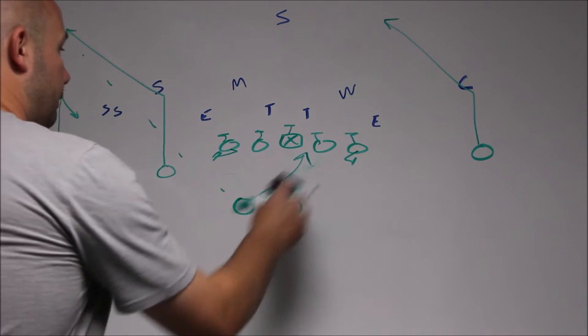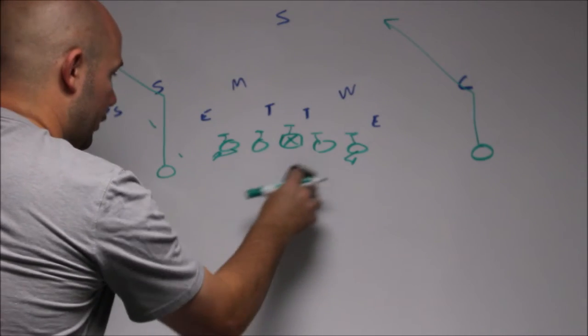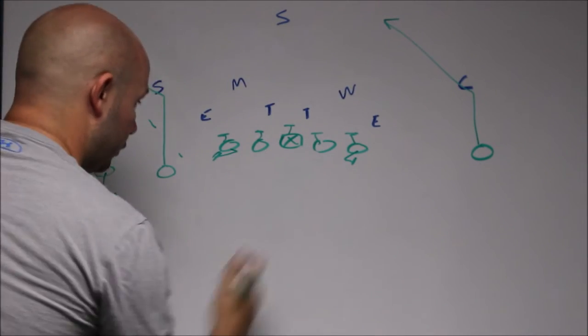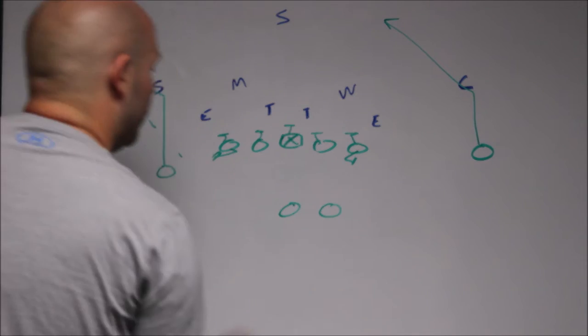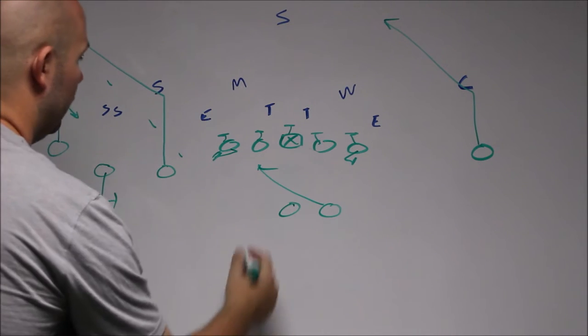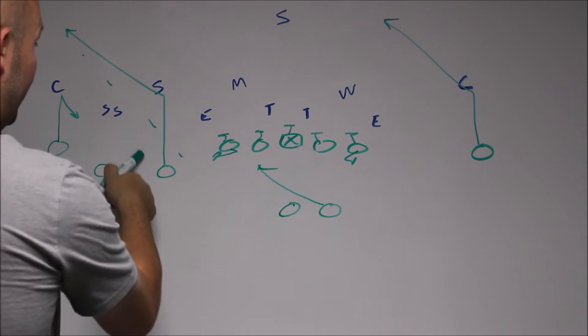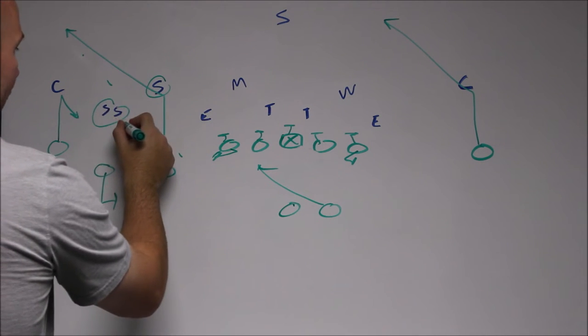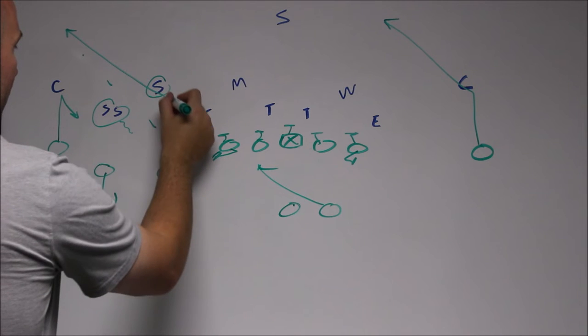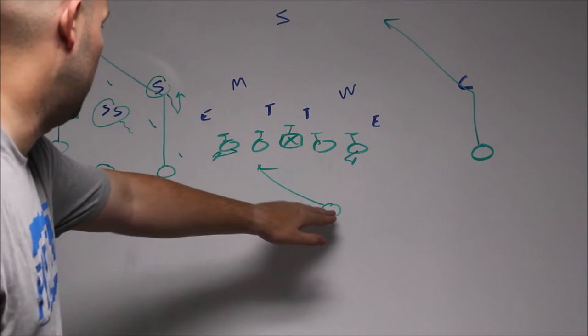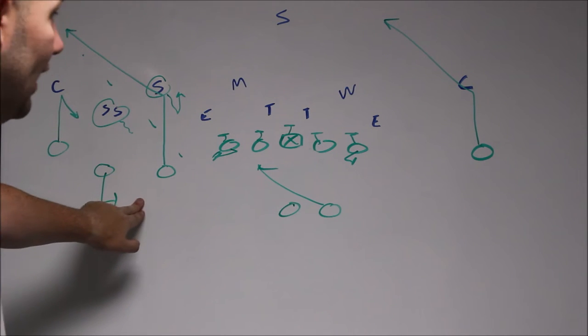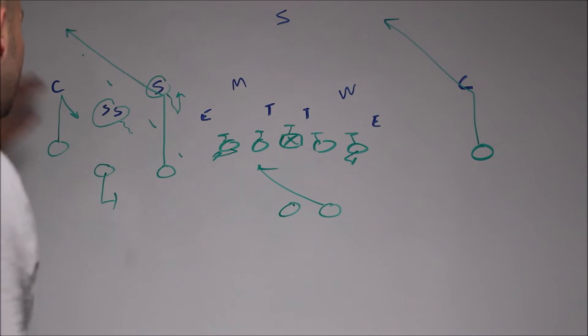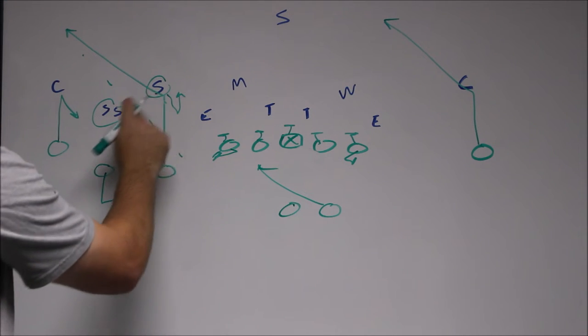If you want, you could also do the inside zone run fake this way, run it at your trip side. That'll really put these kids in conflict. These kids might get caught peeking in the backfield and end up getting beat. Run fake at them to the smash side, and that may be the best way because it'll really make these kids get caught looking in the backfield.